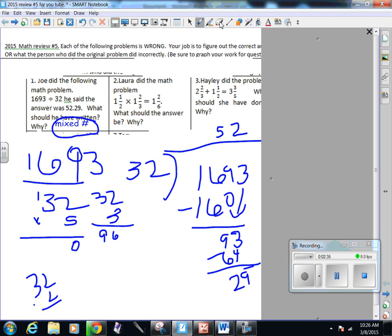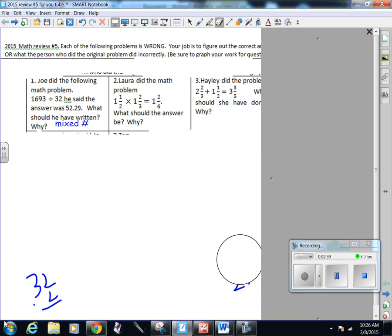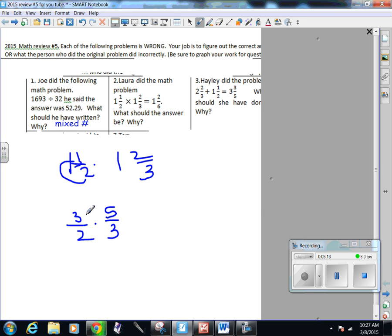Question number two says Laura did the math problem 1 and a half times 1 and two thirds. I remember that when I multiply fractions and mixed numbers rather, I need to make this into a fraction. So to do that, I do the backward C thing. So 2 times 1 is 2 plus 1 more is 3 over 2, times 3 plus 2 more is 5 over 3. And then when I multiply, I just multiply straight across. So I'm just going to multiply these and multiply these, and then change this to a mixed number, and that'll be my answer.